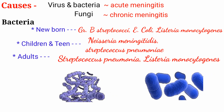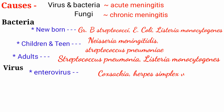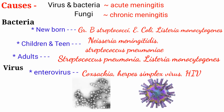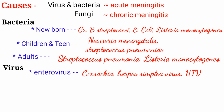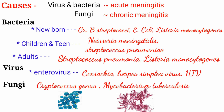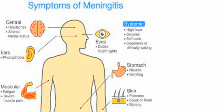In adults, the most common causes are Streptococcus pneumoniae and Listeria monocytogenes. For viruses, the main cause is enterovirus — specifically Coxsackievirus and herpes simplex virus. HIV is another cause of viral meningitis. Some fungi can also cause meningitis, like Cryptococcus neoformans. Mycobacterium tuberculosis can also cause tubercular meningitis.